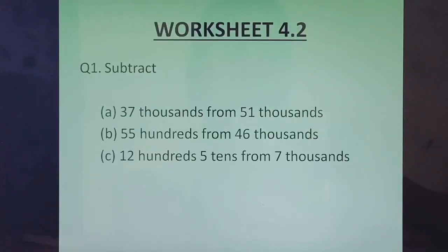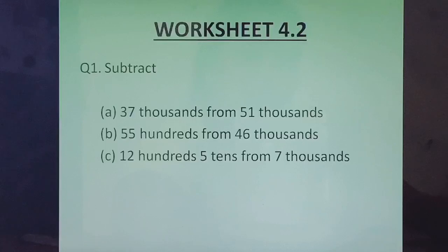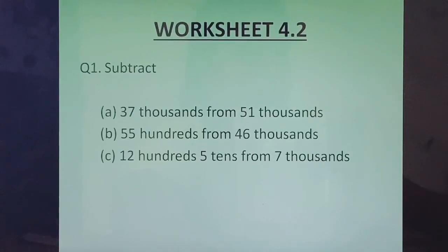Question 1: Subtract. Part A: 37,000 from 51,000. Here it is a very easy question. Both numbers are in thousands; you just have to subtract. Part B: 55 hundreds from 46,000. You will have to convert 46,000 to hundreds first and then do the subtraction.